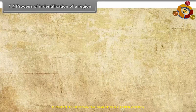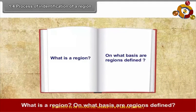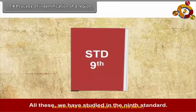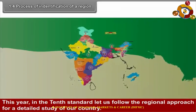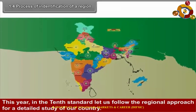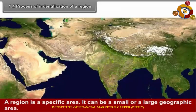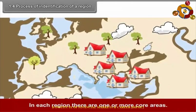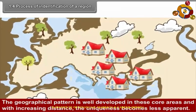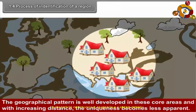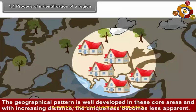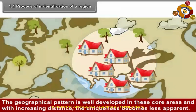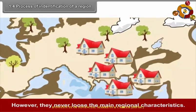In Section 1.4, we explore the process of identification of a region. A region is a specific area — it can be small or large. In each region, there are one or more core areas where the geographical pattern is well developed. With increasing distance, the uniqueness becomes less apparent; however, regions never lose their main regional characteristics.